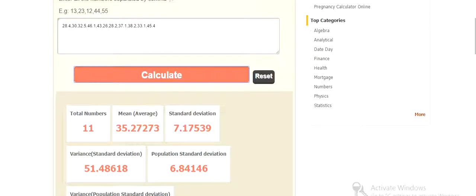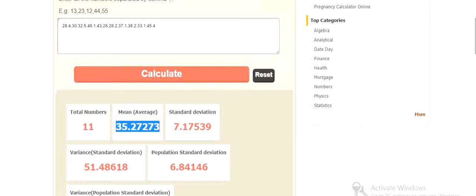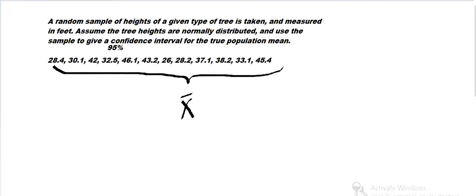And then we want to calculate the mean. So we're getting the mean is 35.27273. Copy that and paste that in. And then the mean is that.